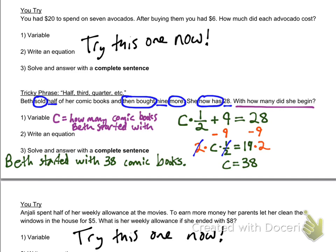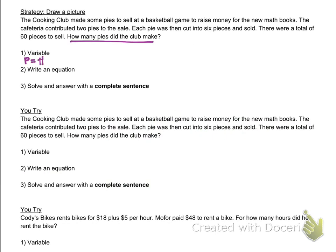Now I'm going to do the last one. This is a tricky one, but I want to show you another strategy, which is to draw a picture. Sometimes it's hard to draw a picture of a variable because you don't know how many there are, and I'll show you how to do that. How many pies did the club make is the question, so I'm going to make P be the number of pies made by the club.